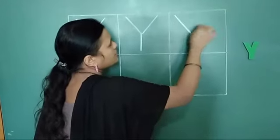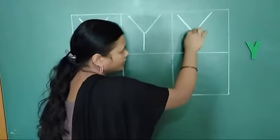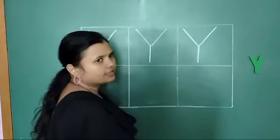Chalo say again. Slanting line, slanting line, and again one standing line. This is Y.